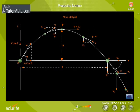Time of flight. Time of flight of a projectile is the time taken by it from the instant when it is projected to the time when it strikes the point in a horizontal plane passing through the point of projection. T is equal to 2V0 sinθ by g.